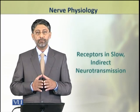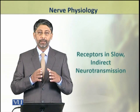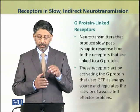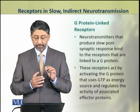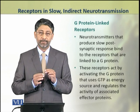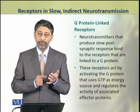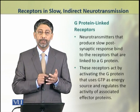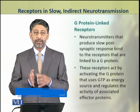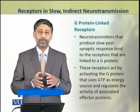In this module we shall discuss the receptors involved in slow and indirect neurotransmission. Neurotransmitters that produce slow post-synaptic responses bind to receptors linked to G proteins. These receptors act by activating the G protein, which uses GTP as an energy source. This G protein is linked to effector proteins and results in a cascade of enzyme reactions within the cell that generates the response.